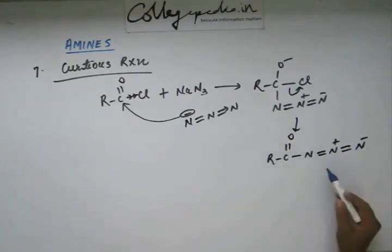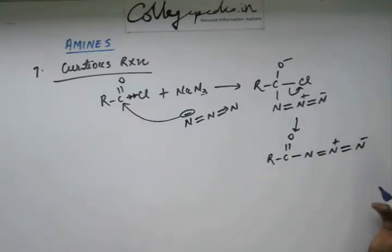Now what will happen is what happened in Wolf-Kishner reduction. For the first time we saw that N2 gas is a very good leaving group. If you heat up a reaction system a little bit, if you shake up the system a little bit, this N2 gas leaves.